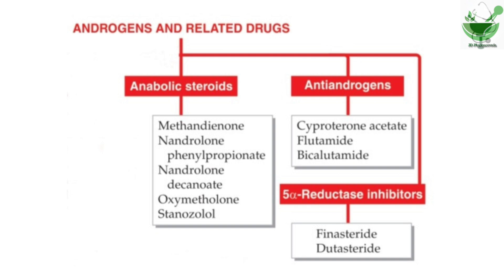The last category is 5-alpha reductase inhibitors. This enzyme converts testosterone into dihydrotestosterone, so we need to inhibit it. The drugs which inhibit 5-alpha reductase are finasteride and dutasteride.